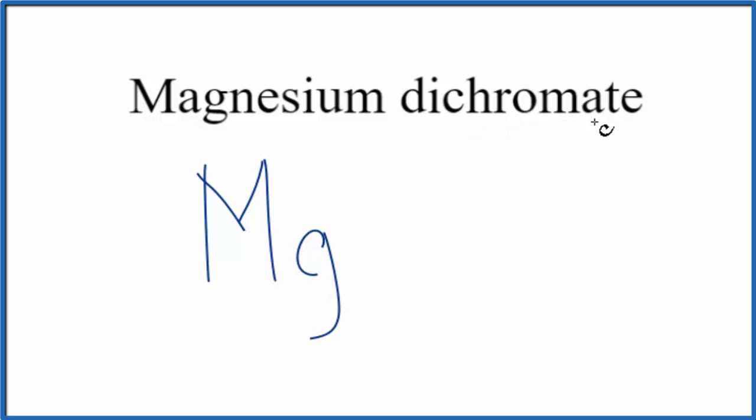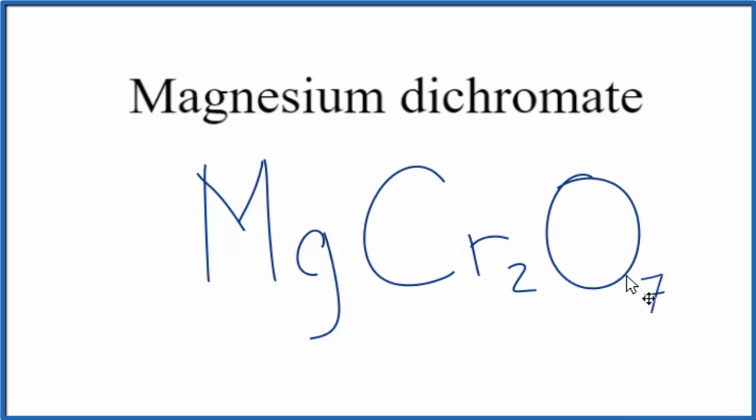For the dichromate here, when you see ATE at the end, it's not going to be on the periodic table. You need to either memorize that dichromate is Cr2O7 or you look it up on a table of polyatomic ions.